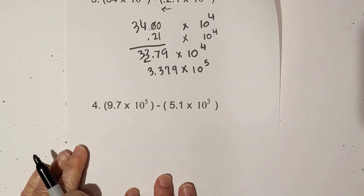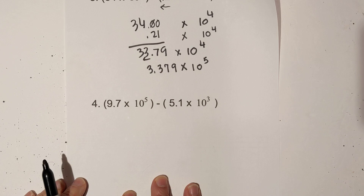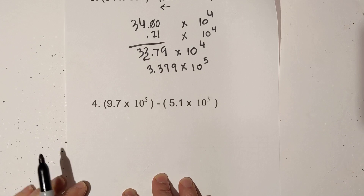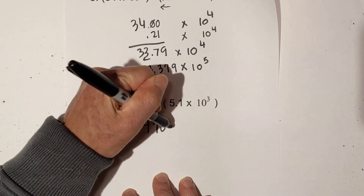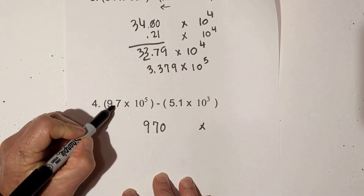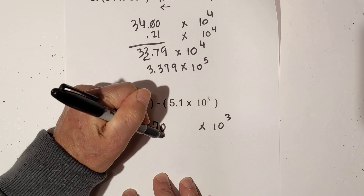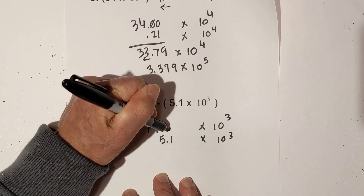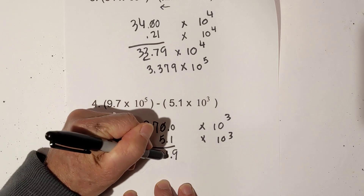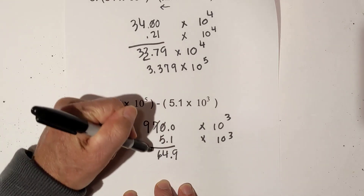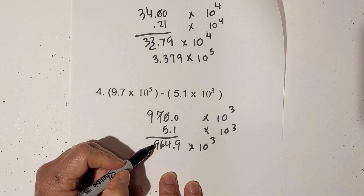The last one: I have 9.7 times 10 to the 5th and 5.1 times 10 to the 3rd. I'm going to move the decimal two places to the right so this becomes 9.70 times 10 to the 3rd — subtracting 2 from the 5. Then subtract 5.1 times 10 to the 3rd. Adding a zero: this becomes a 9, borrowing 1 from there — this becomes a 4, this becomes a 6.